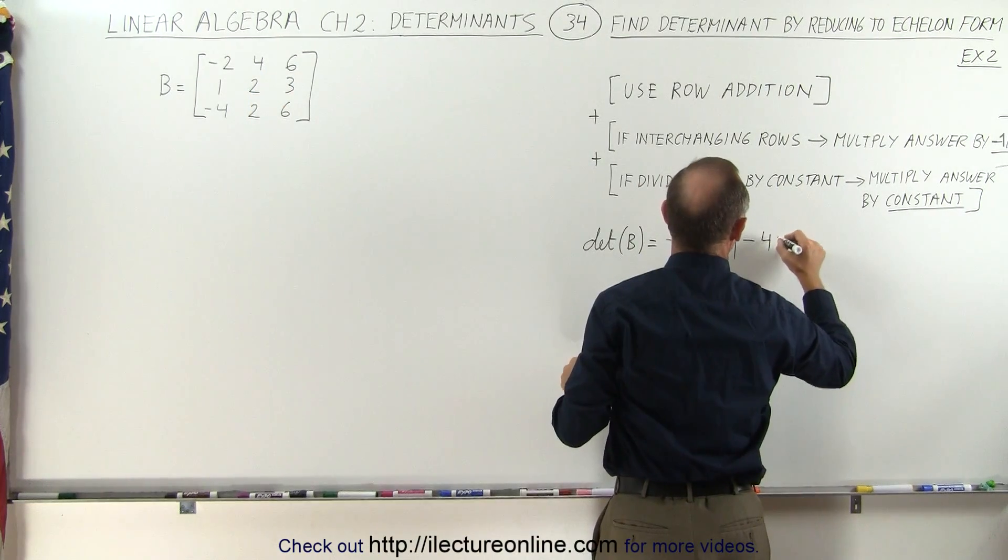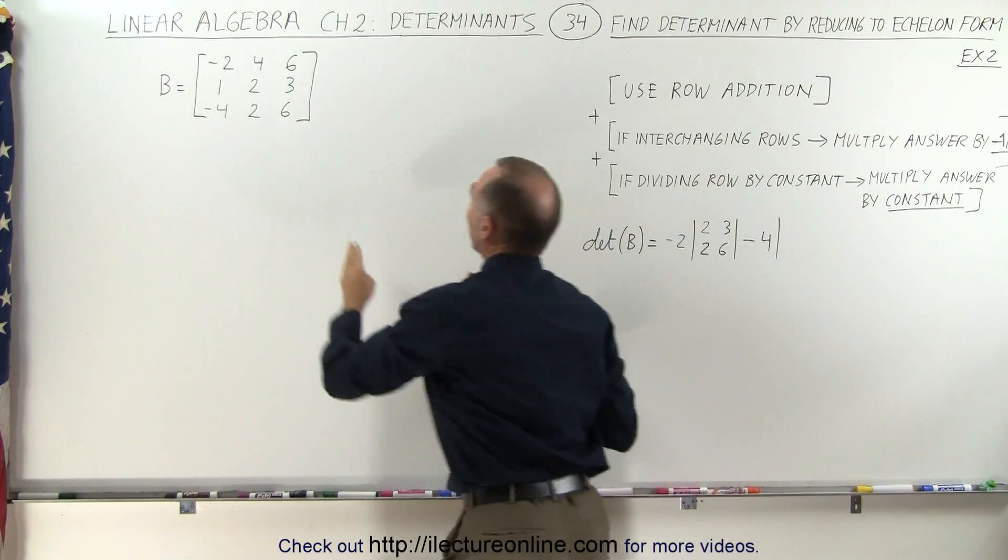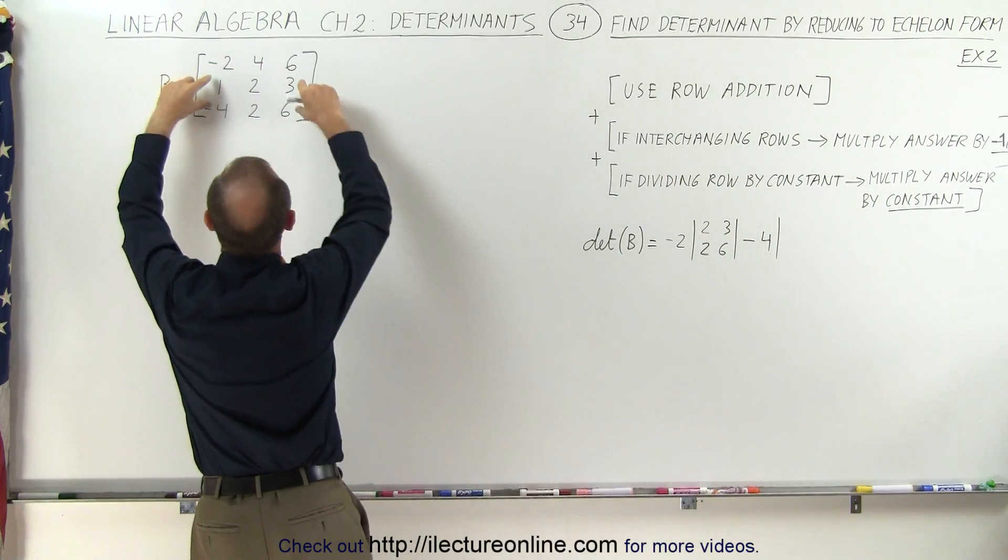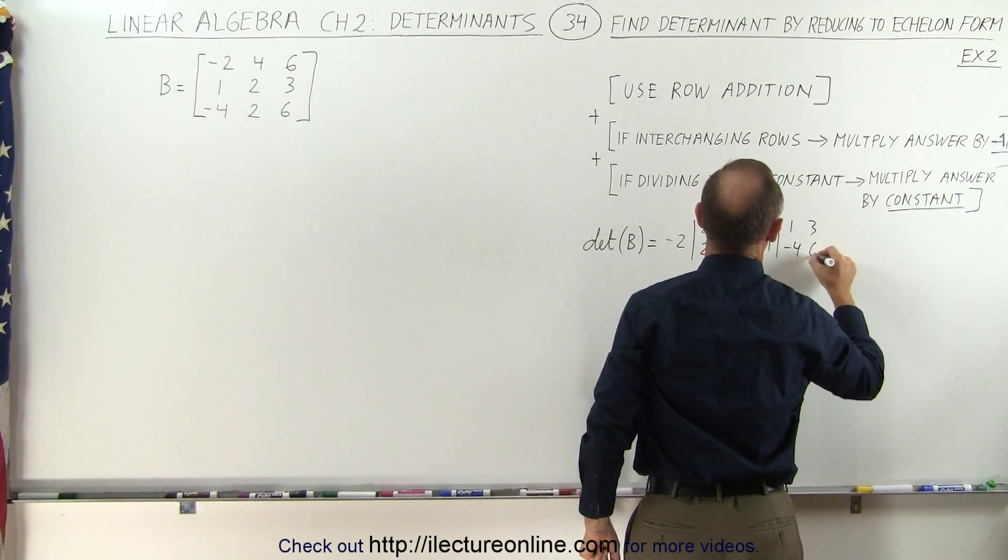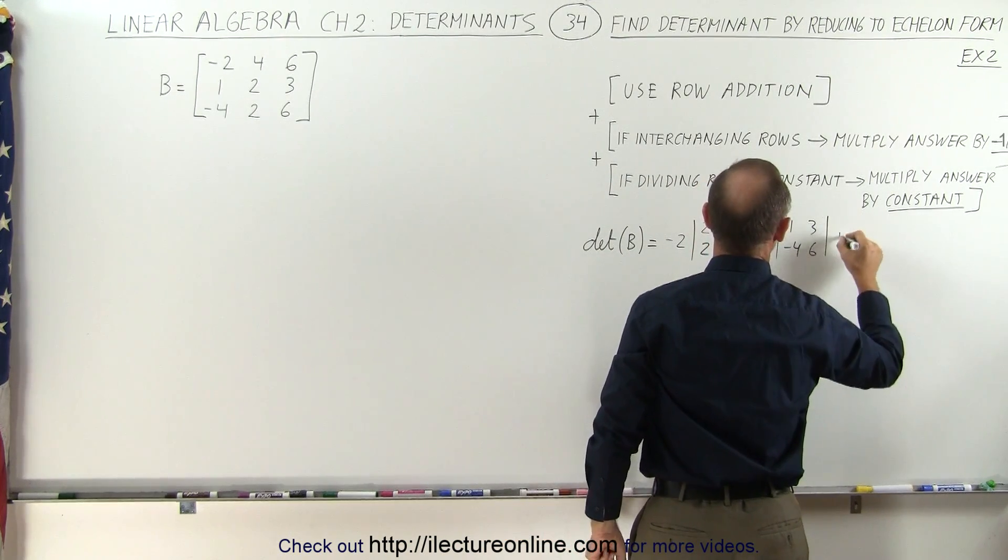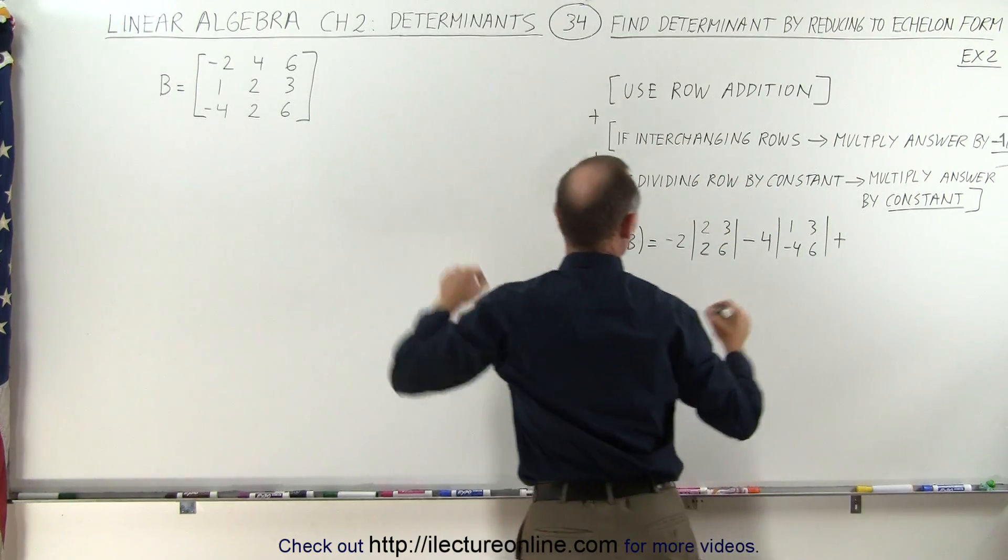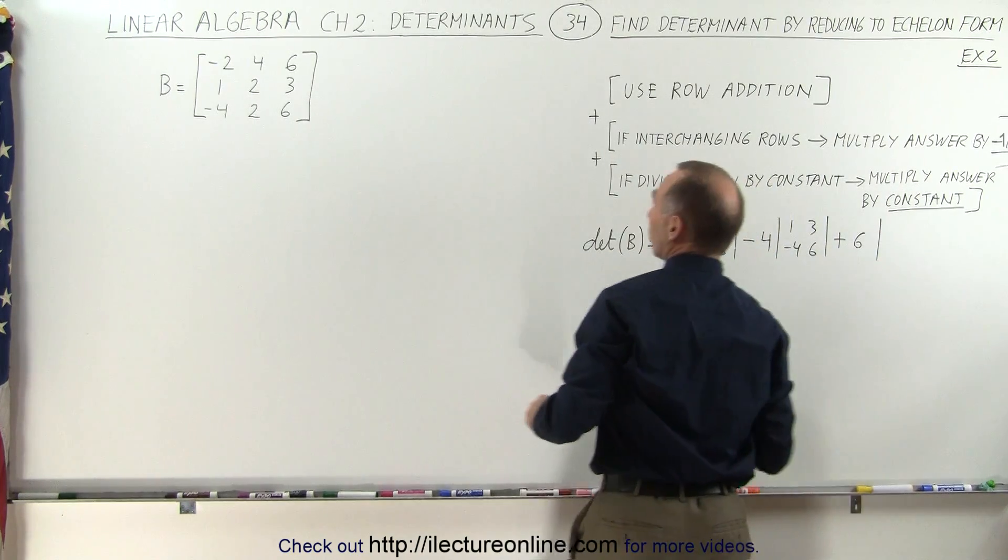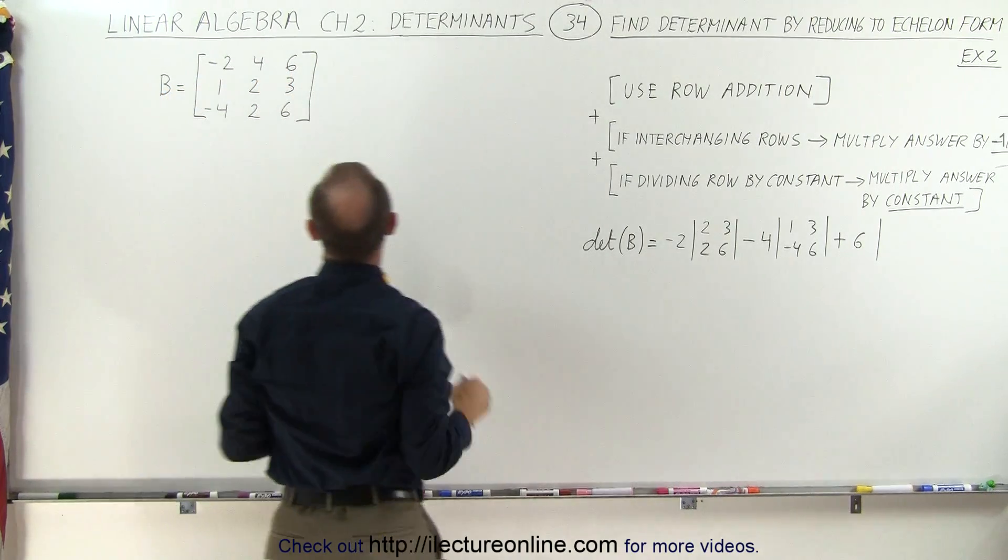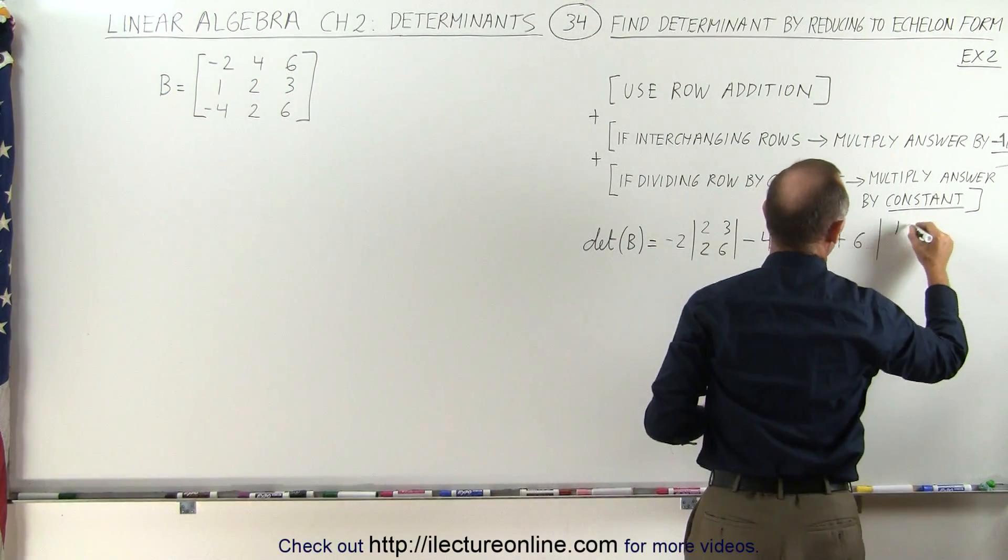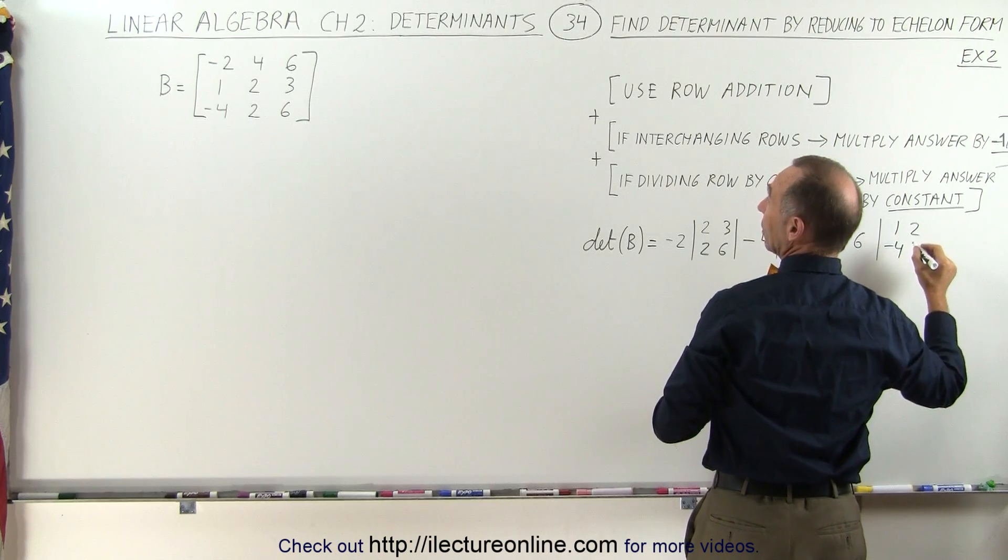Times, and we cross out this column in this row, so we end up with those four elements, 1, 3, negative 4, and 6. And then finally plus the last element, which is 6, times the determinant we get when we cross out this row in this column. We get those four elements right here, 1, 2, negative 4, and 2.